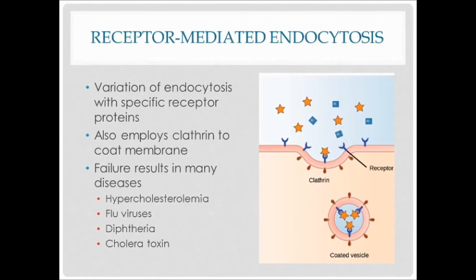In receptor-mediated endocytosis — a variation of endocytosis — there are very specific receptors, and clathrin is also used to coat the membrane for support. Receptor-mediated endocytosis is extremely important in living organisms because it is so specific to different molecules. Without it, a lot of diseases may occur, such as hypercholesterolemia, flu viruses, diphtheria, and the cholera toxin.